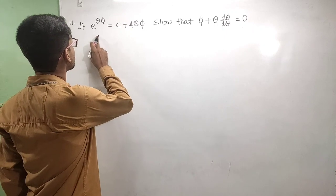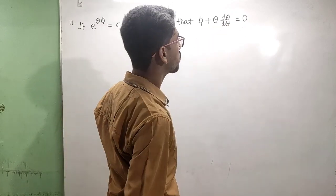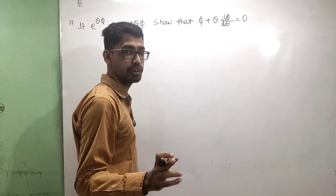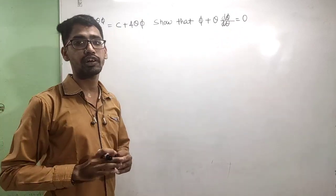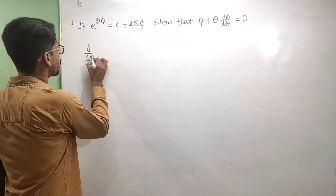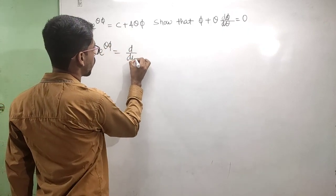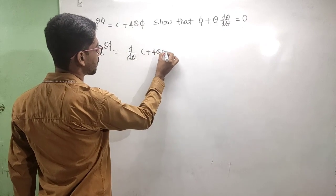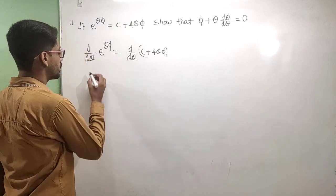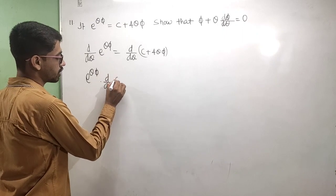Next, question two: if e^(θ·φ) is equal to c + 4θ·φ, then show that φ + θ · dφ/dθ is equal to 0. Differentiating both sides with respect to θ: derivative of e^(θ·φ) equals derivative of c + 4θ·φ.